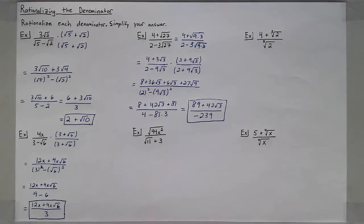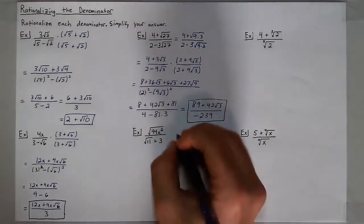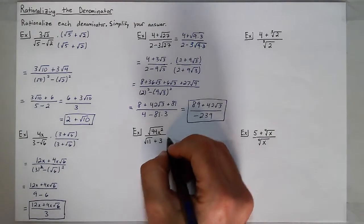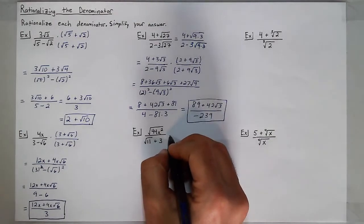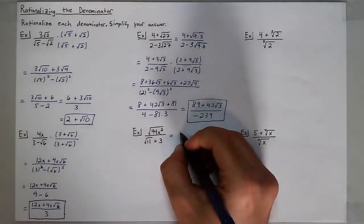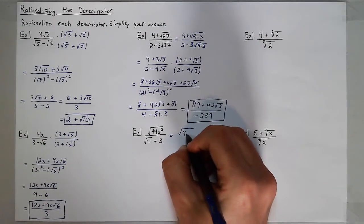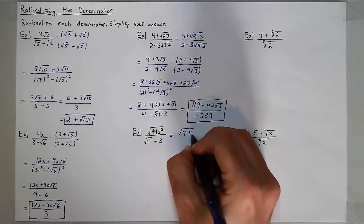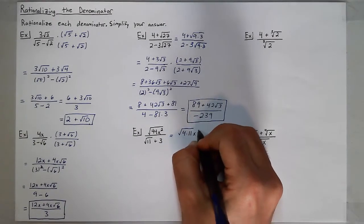Next I have the square root of 44x squared over the square root of 11 plus 3. I'm going to simplify before I start. I notice that 44 has a perfect square factor of 4 times 11, and x squared is also a perfect square.